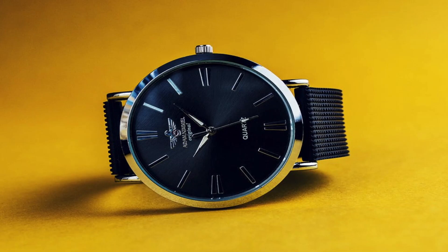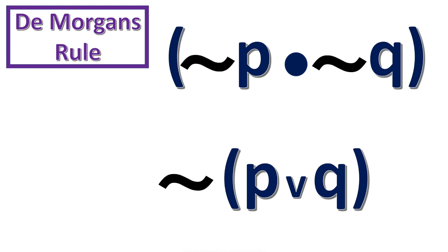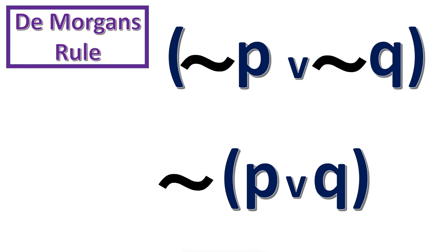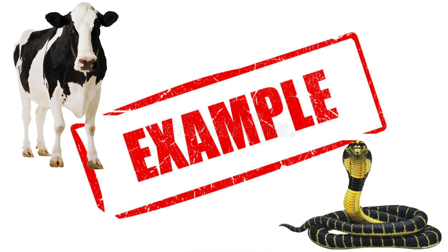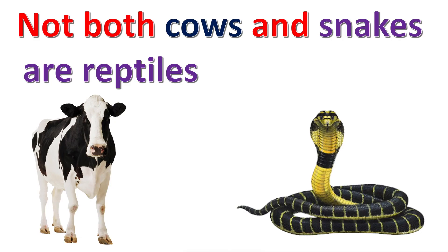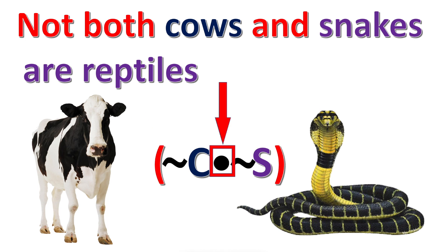And now, DeMorgan's rule. According to DeMorgan's rule, when the tilde is moved to the inside of the parentheses, a dot changes to a wedge, and a wedge changes to a dot. For example, this statement is translated like this. Or you can move the tilde inside the parentheses and translate it like this, but you must change the dot to a wedge.